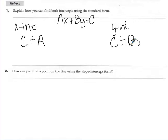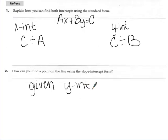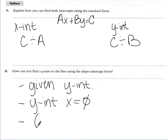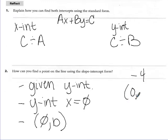How can you find a point on the line using slope-intercept form? In slope-intercept form, you have the Y-intercept, and you know that for the Y-intercept, X has to equal 0. So therefore, you can figure that the point (0, B) is on the line. In the last case, we had negative 4 as the Y-intercept, so you know that (0, negative 4) is a point on the line.